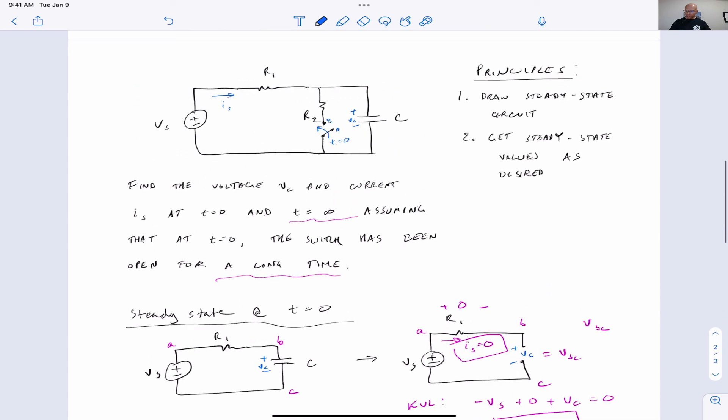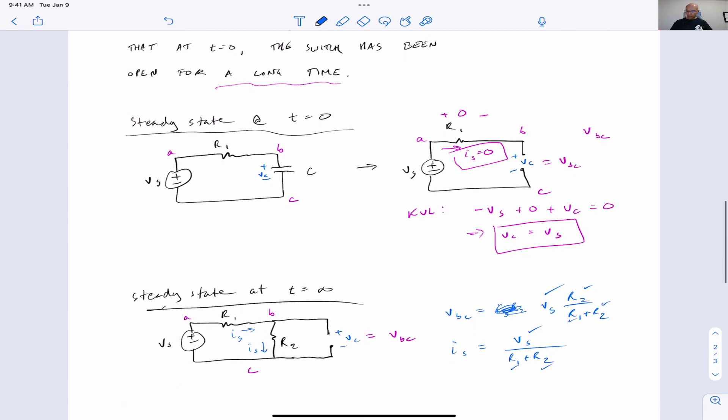So again, the main steps are draw the circuit in steady state. Do that. Don't skip it. It helps you make sure you know what's going on and analyze it properly. Then you get the steady state values as desired, just like I showed you.